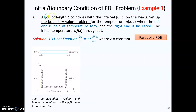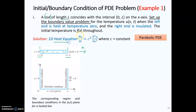In this problem, you have a rod with length equal to L. We draw the rod here and draw the x-axis in this direction. Therefore, at the left end you have x equal to 0, and at the right end you have x equal to L. This rod is modeled by the 1D heat equation, which is a parabolic PDE. You want to find the temperature solution U at various locations x with respect to time.